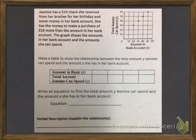Janine has a $10 check she received from her brother for her birthday and some money in her bank account. She has the money to make a purchase of $10 more than the amount in her bank account. The graph shows the amounts in her bank account and the amount she can spend. Make a table to show the relationship between the total amount y Janine can spend and the total amount x she has in her bank account. So again, let's look at our ordered pairs.